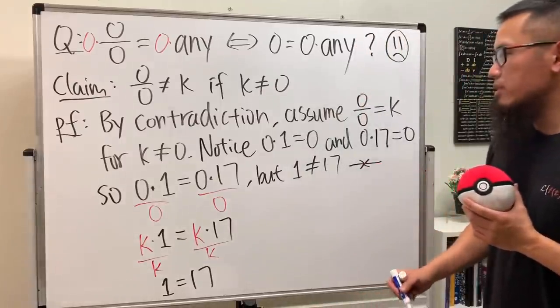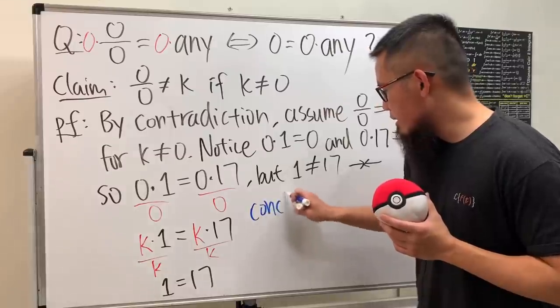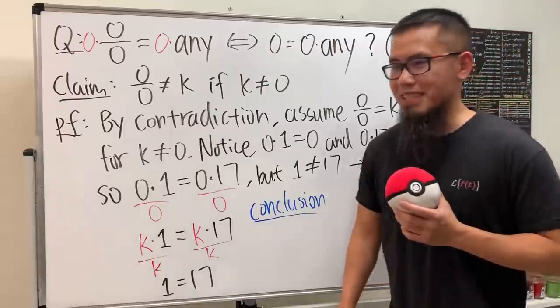I think that's pretty serious, huh? So in my opinion, this is my conclusion. I believe currently zero over zero is not defined.